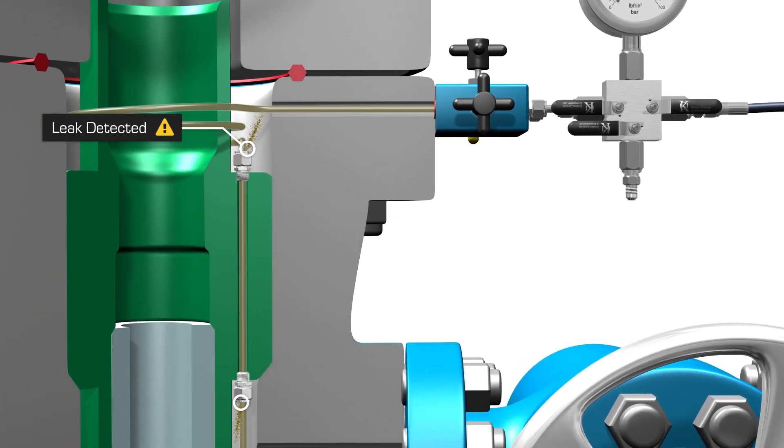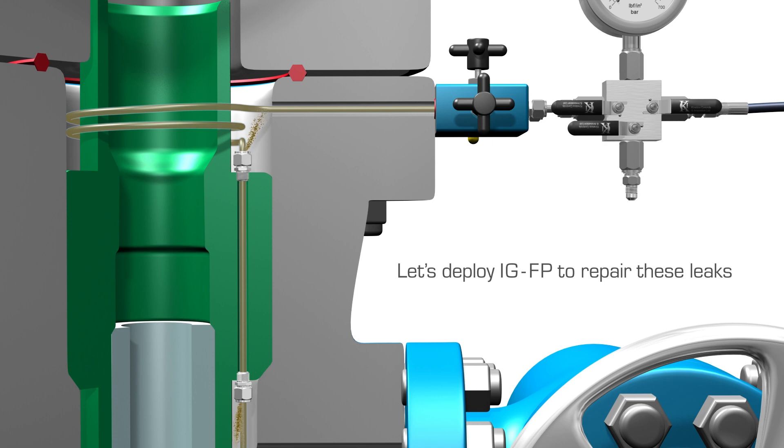Vent off the pressure and allow pressure to build up again. Check to see if the control line is in communication with the tubing or annulus. This will give an indication of where the leak is.